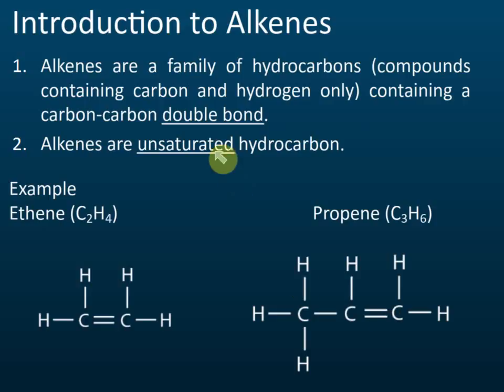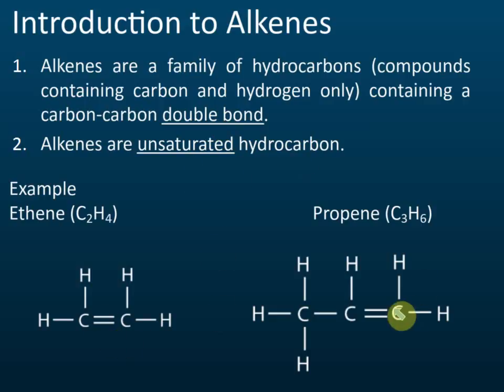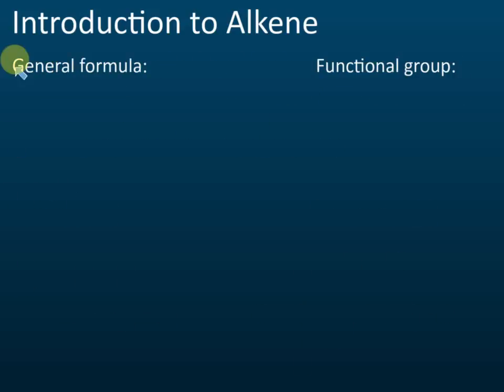For saturated hydrocarbons, there are no double bonds — all the bonds are single bonds. For unsaturated hydrocarbons, there is at least one double or triple bond. Triple bonds are not in our syllabus. Since alkenes have double bonds, they are unsaturated hydrocarbons.